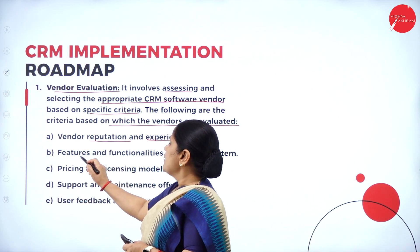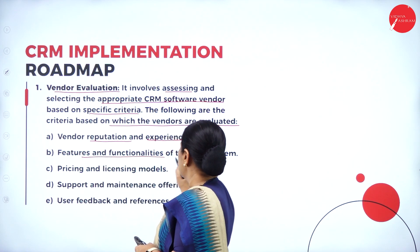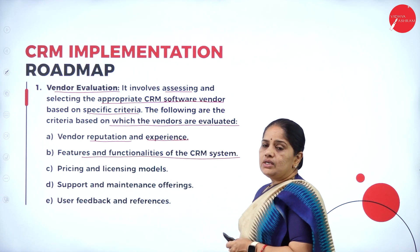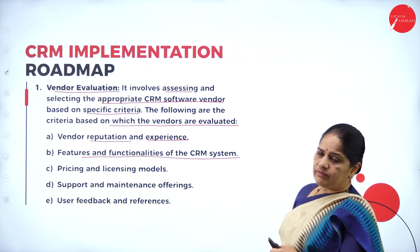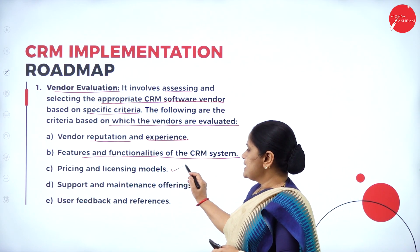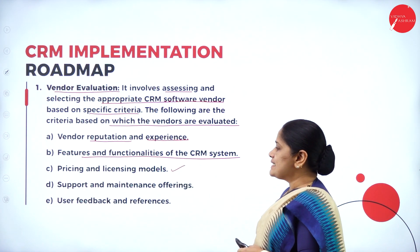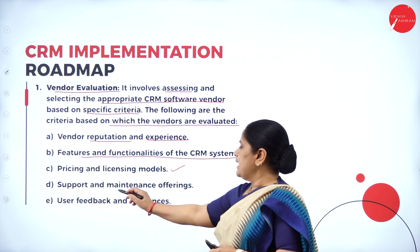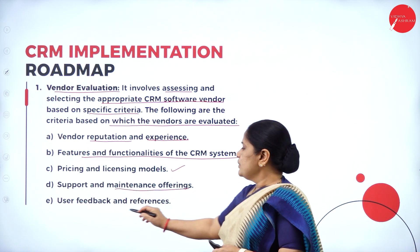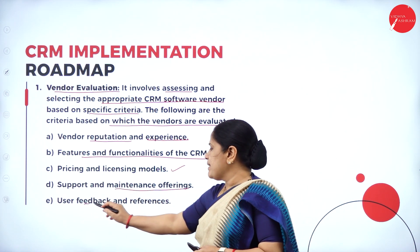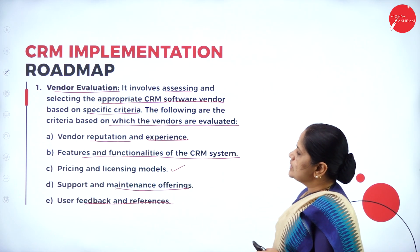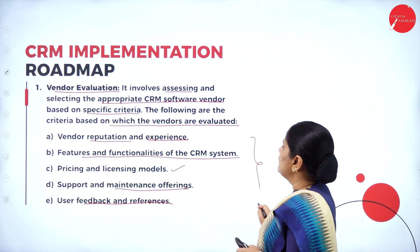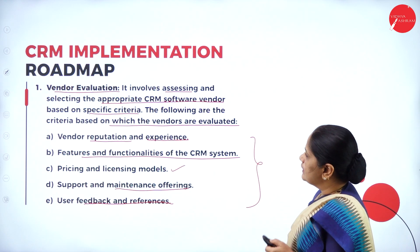The second criterion is features and functionalities of the CRM system — what are the features and what are the functions. Then pricing and licensing models, support and maintenance offerings, and user feedback and references. These are the criteria based on which vendors are evaluated.